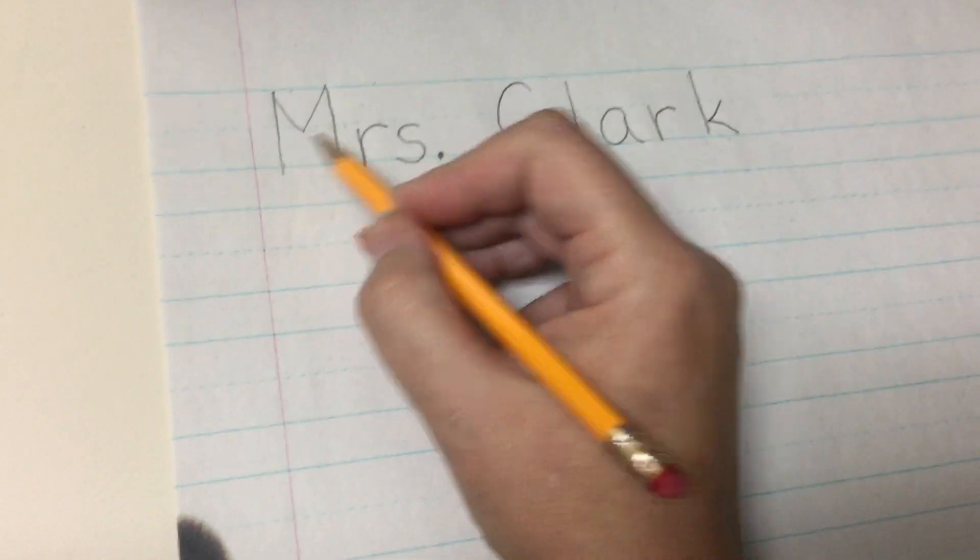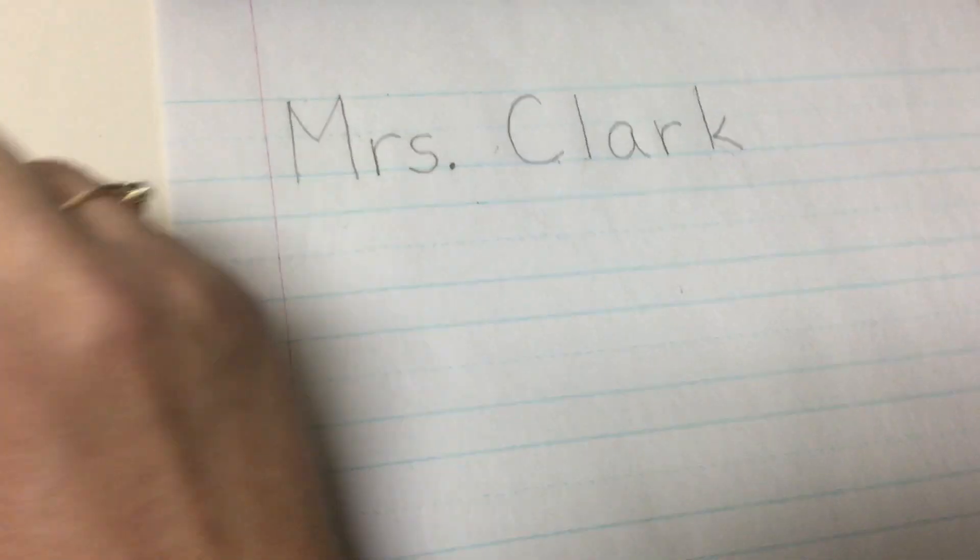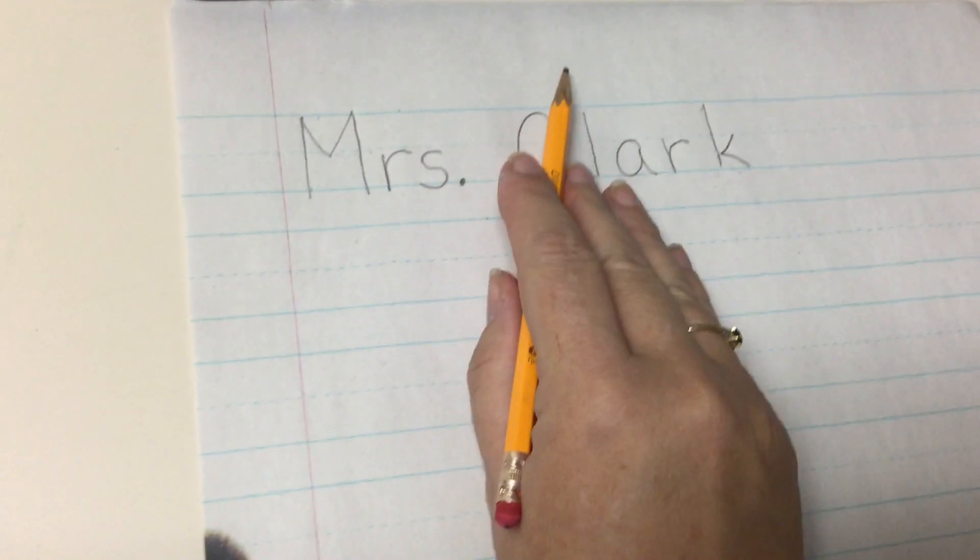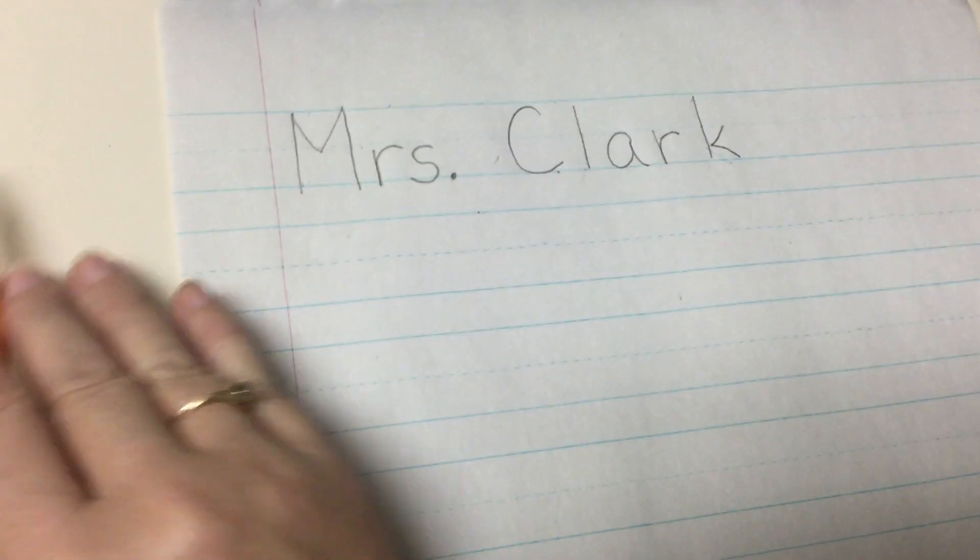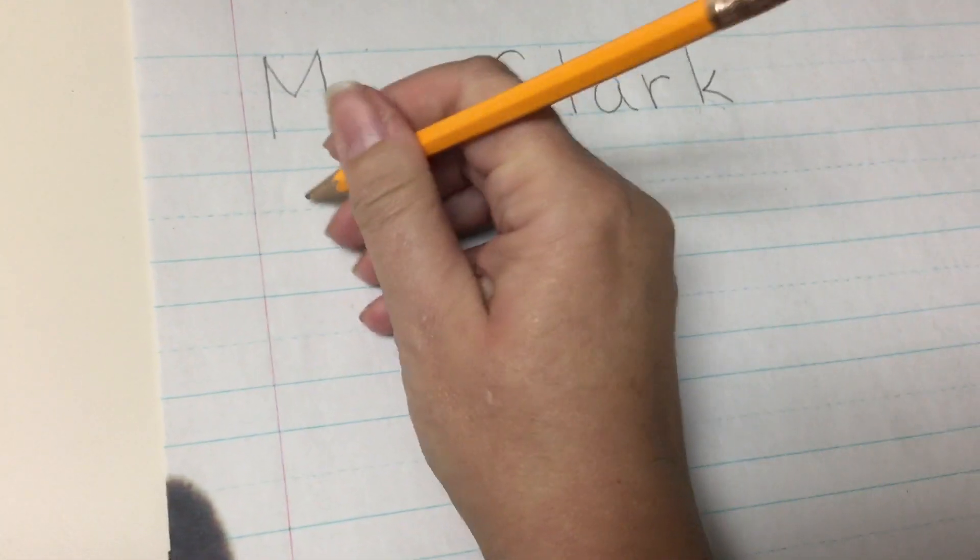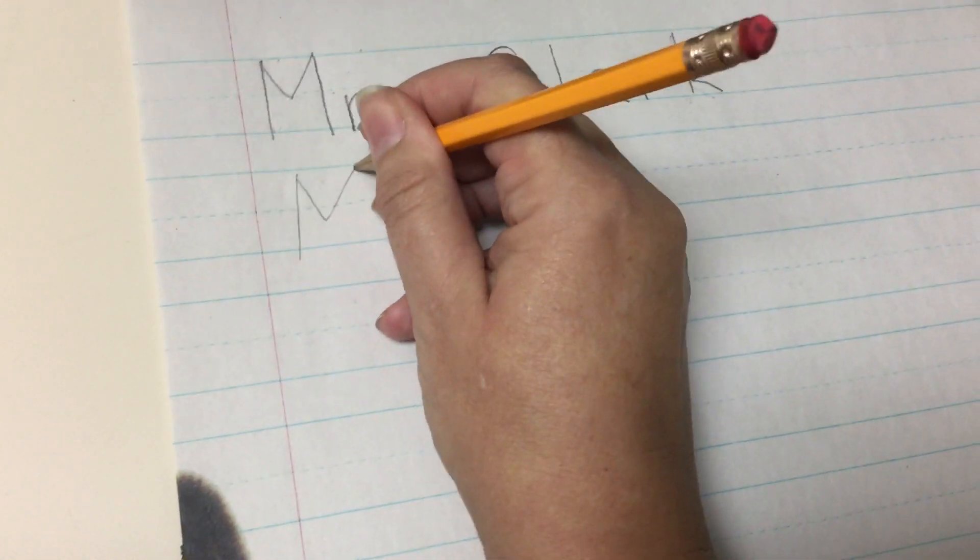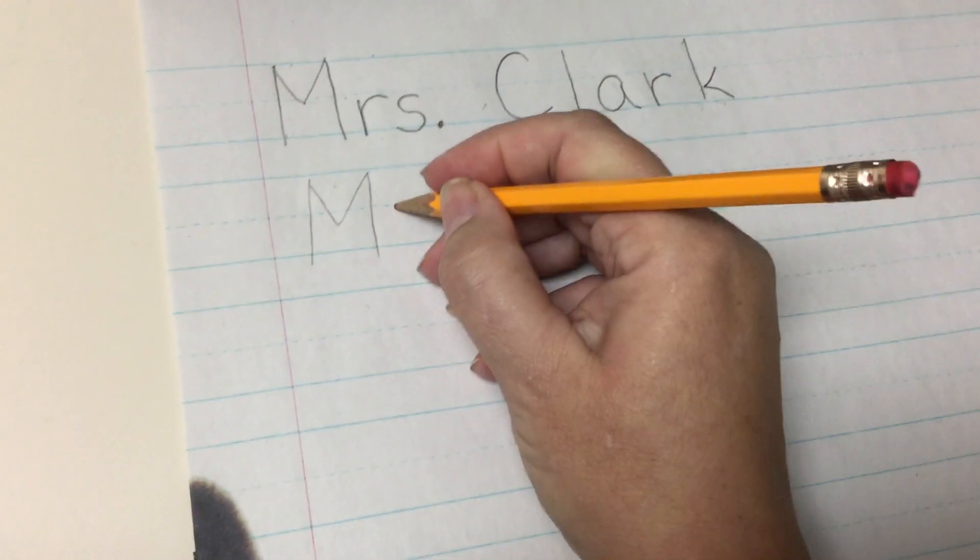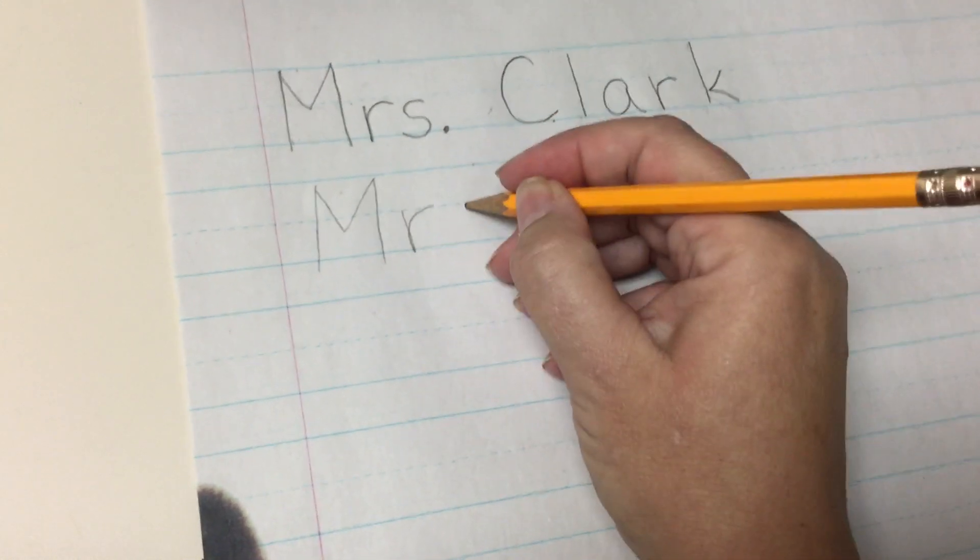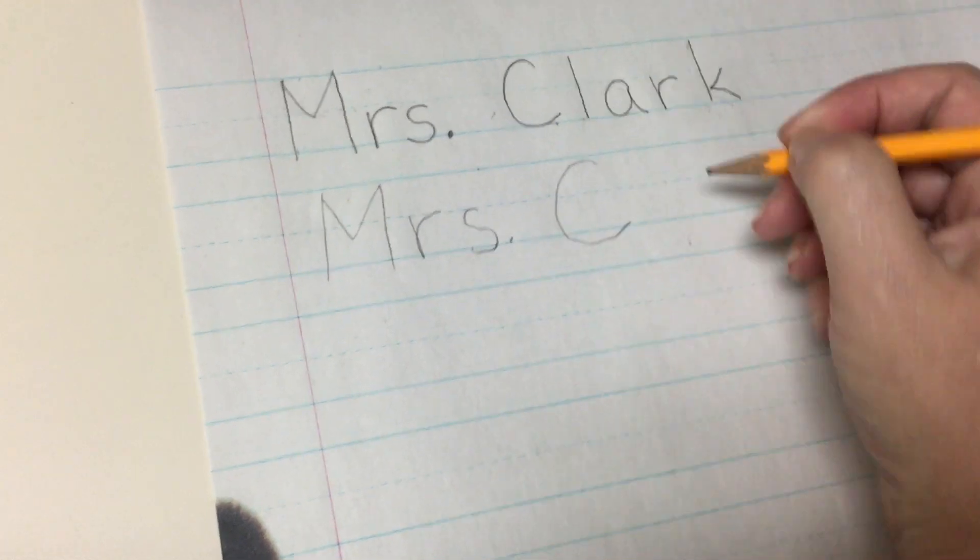You can write it for them. Write their first name for them as a good model so that they don't have to look over here at the name tag, transfer over here for writing, look back at the name tag, back and forth. You can write it on the top line and then watch the grip, watch the formation of the letters, and have them practice on this next line like I'm doing. Now I'm the kiddo.